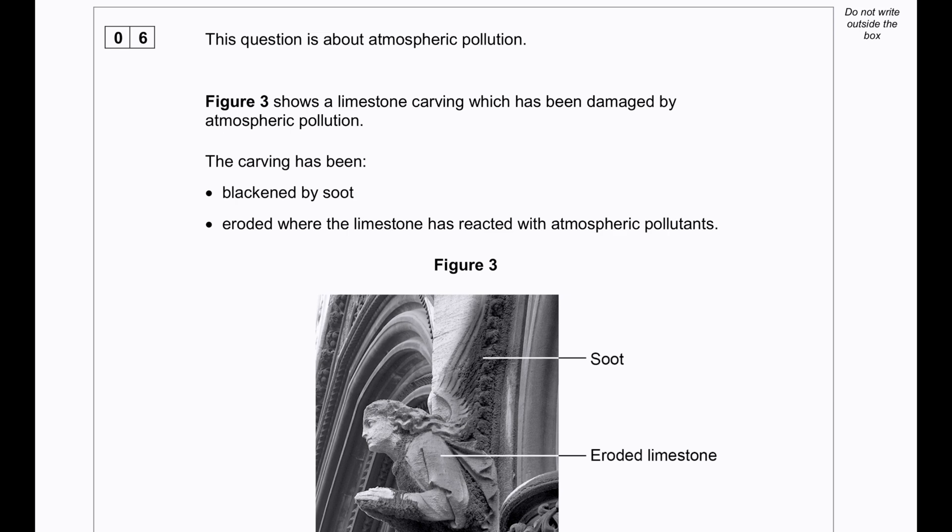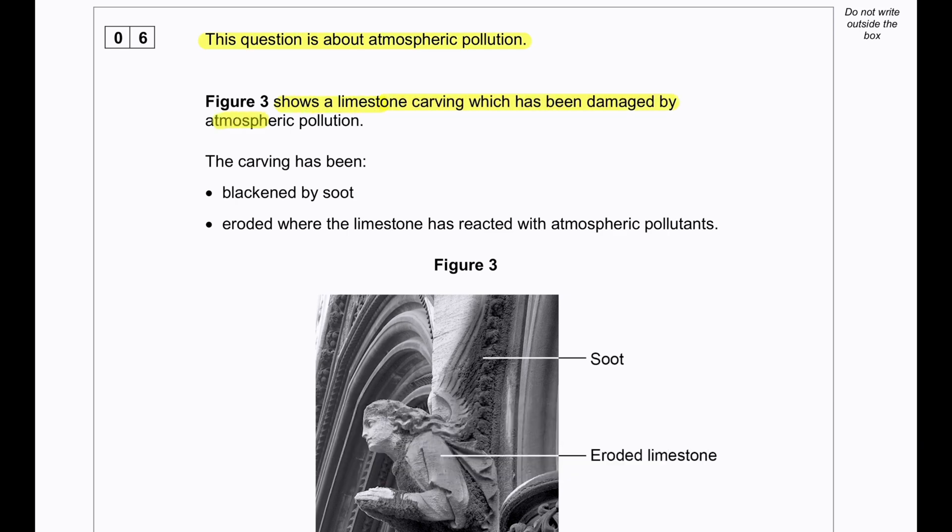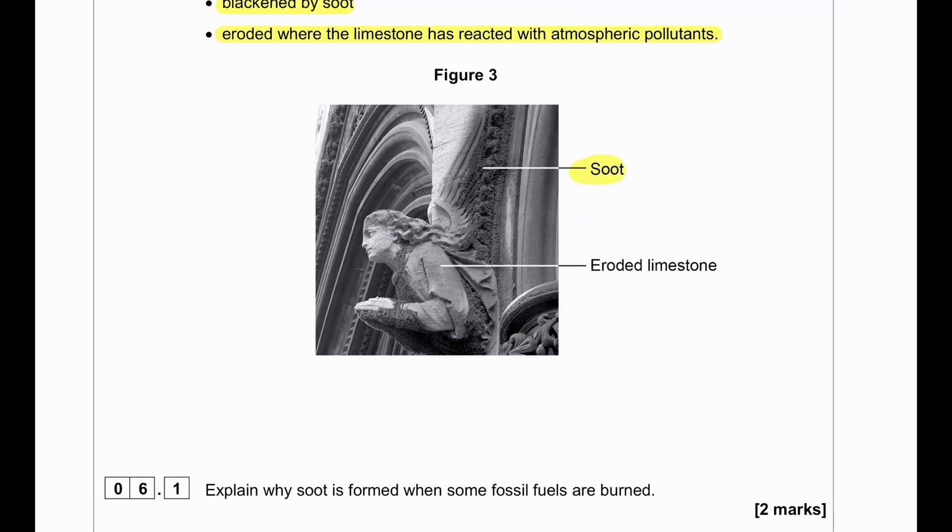This question is about atmospheric pollution. Figure 3 shows a limestone carving which has been damaged by atmospheric pollution. The carving has been blackened by soot and eroded where the limestone has reacted with atmospheric pollutants. We can see the soot has caused the particular carving to become black in color and we can see eroded limestone.